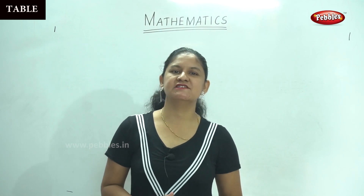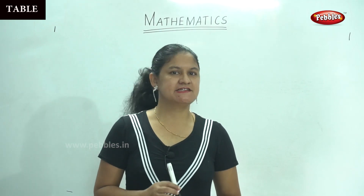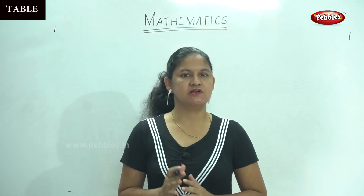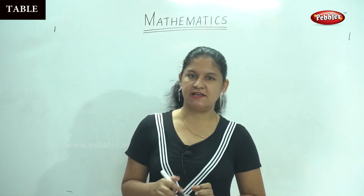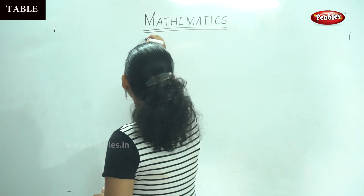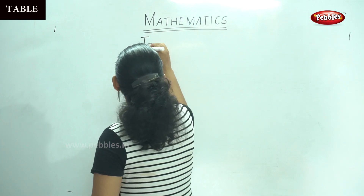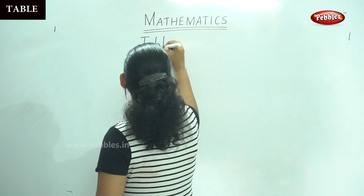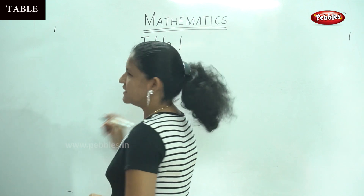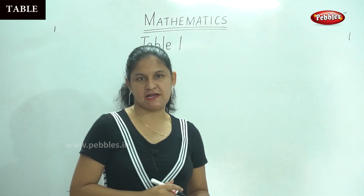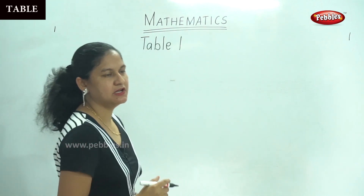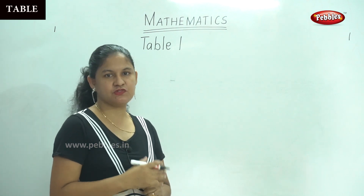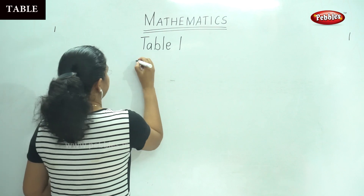Today we are going to see Table 1. We have already learned numbers 1 to 10, and next we are going to see the 1 times table. Any number multiplied by 1 will give you the same number. For example: